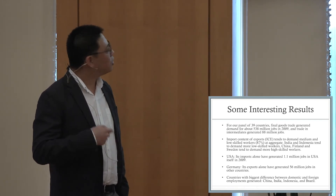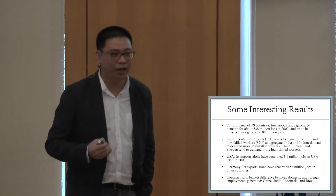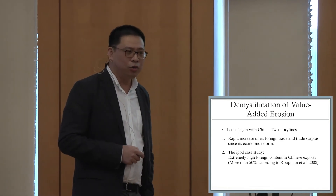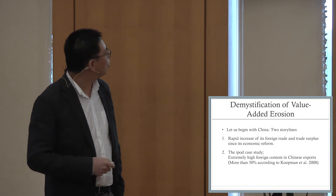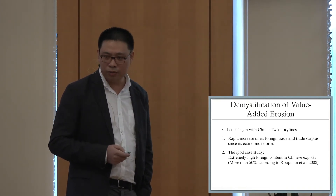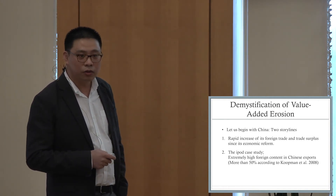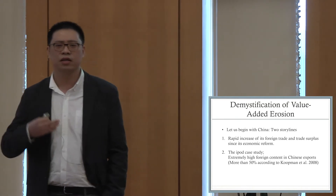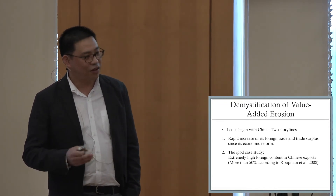This is interesting, but what I really wanted to do is have the results explain some economic phenomenon — what I call value-added erosion. Take the example of China: there are always two storylines. The popular one is the very rapid increase in foreign trade and trade surplus since China's economic reform, which gets everybody worried, including your president. The second storyline is the iPhone case study — yes, Chinese companies are exporting a lot, but how much value-added is there? For firms and workers to benefit from exporting, it needs to translate into value-added. The iPhone case study shows the value-added is actually quite low, and according to the US International Trade Commission, the foreign content in Chinese exports is more than 50%.